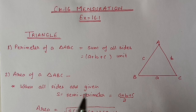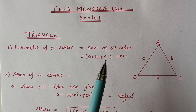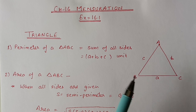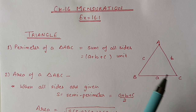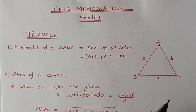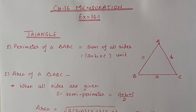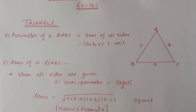Perimeter of a triangle means the sum of all the sides. All three sides will be given; you just have to add all three sides and that will be the perimeter of the triangle. For area, we have different conditions. The first condition is when all three sides are given.